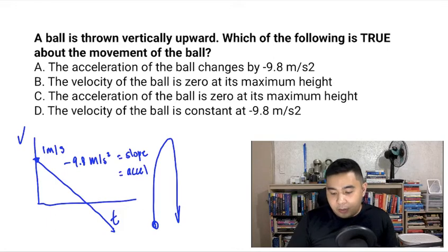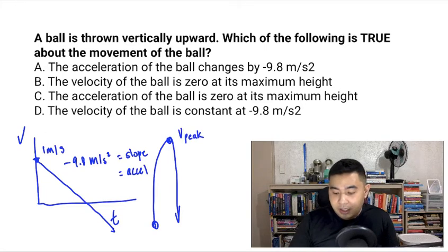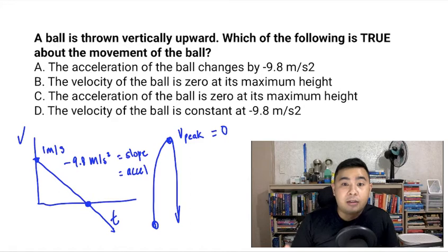Now, at the peak of its height, so V peak, the velocity is going to be 0. And that coincides with this portion in the graph. So that's going to be the maximum height of the ball.